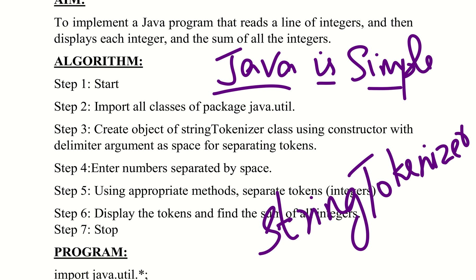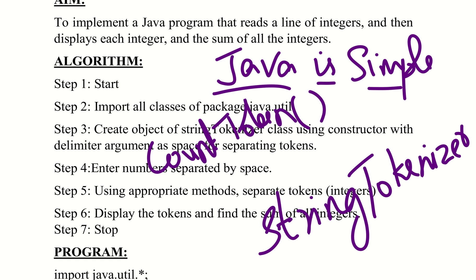The StringTokenizer class has a constructor and different methods. For example, countTokens — this method tells how many tokens are present in a particular string. Then there is hasMoreTokens, which is a boolean method that returns either true or false, checking whether any more tokens are available.